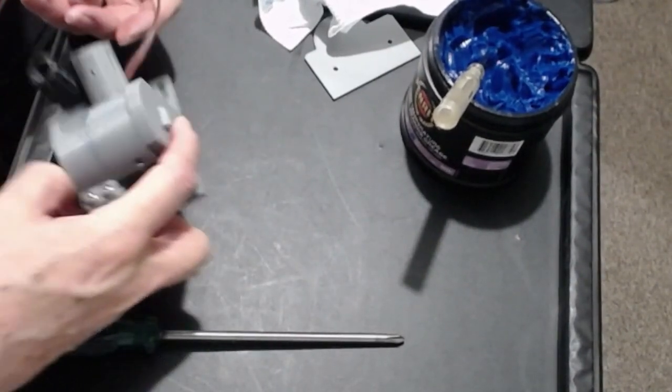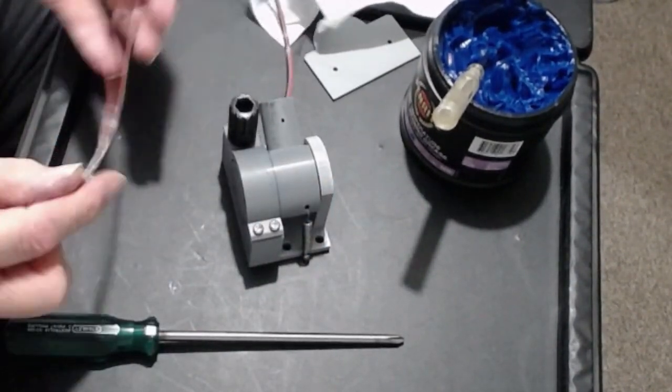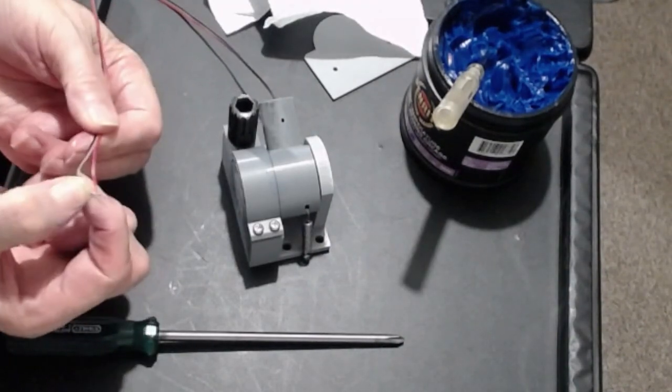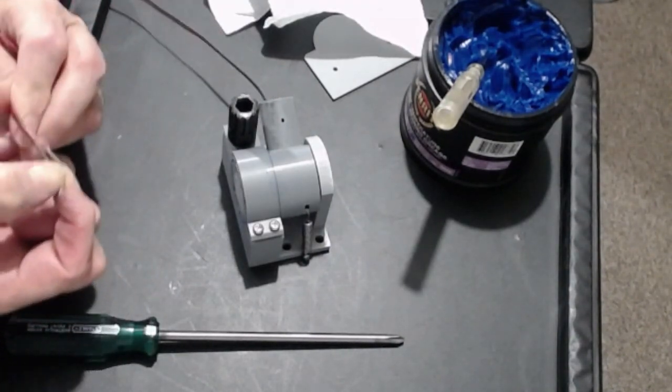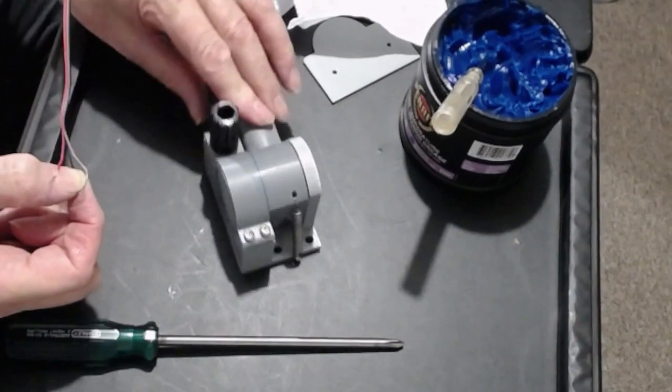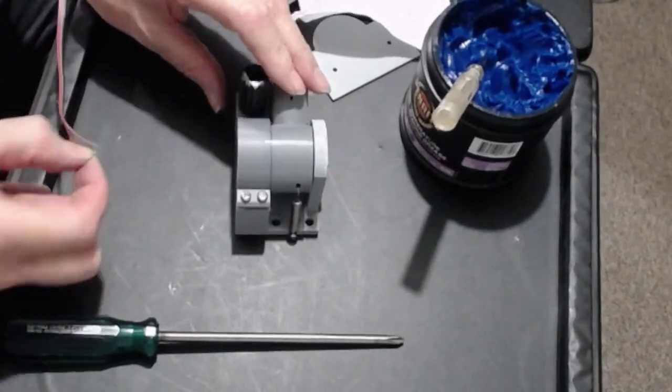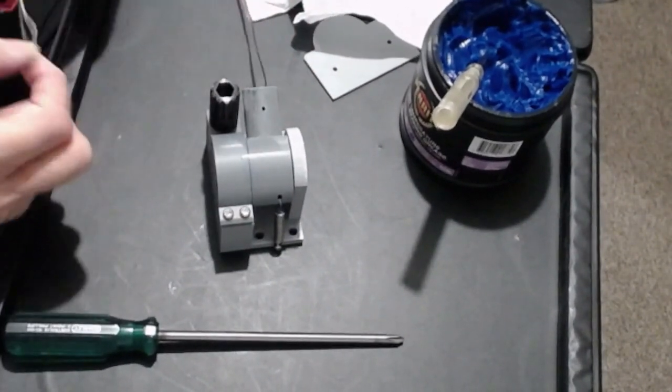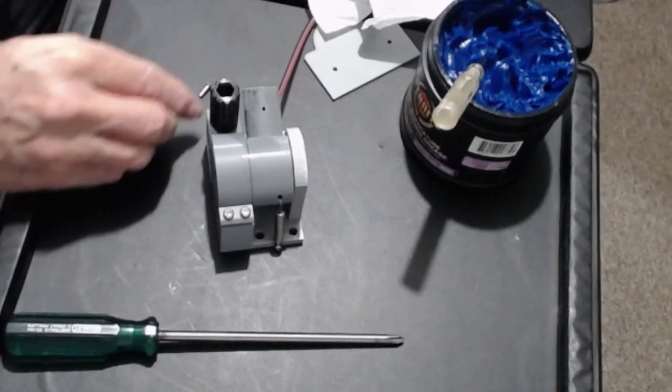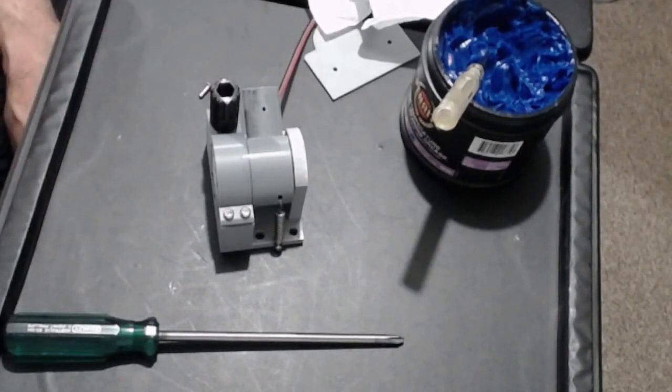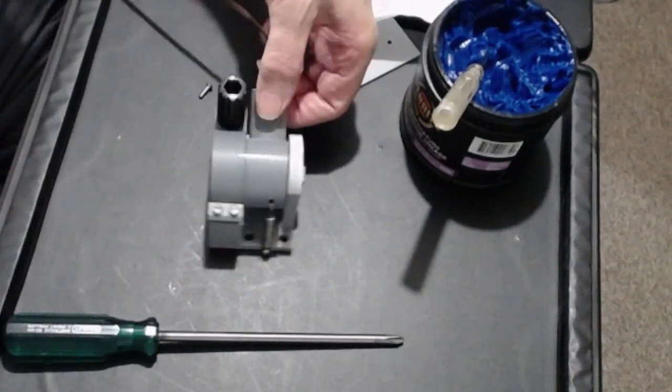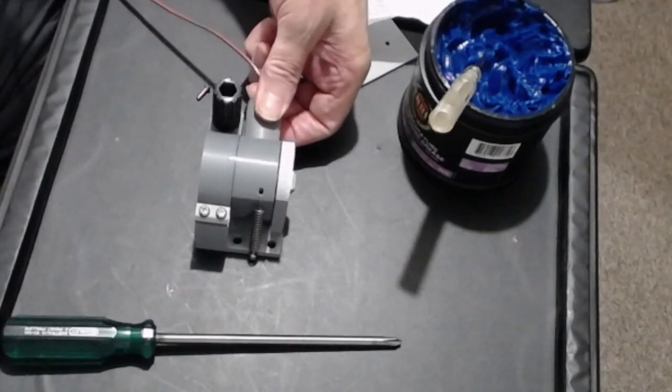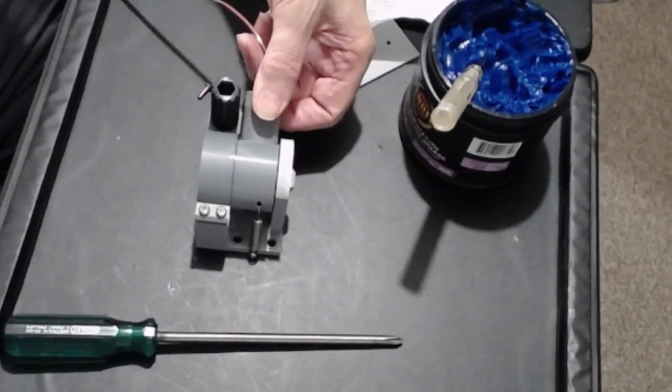At this point you can hook this up as we said before to power and a multimeter and check the operation of your base, see if it's working correctly. We're pretty well finished on the base end of it. Next we'll come with the head, but that will be in a little while.